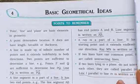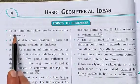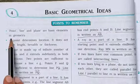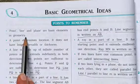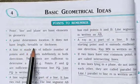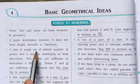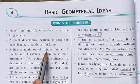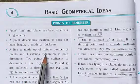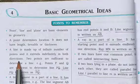The first we understand the main points of this chapter — the points to remember. Points, line and plane are basic elements in geometry. A point determines a location. It does not have length, breadth or thickness. A line is made up of an infinite number of points and it extends indefinitely in both directions.